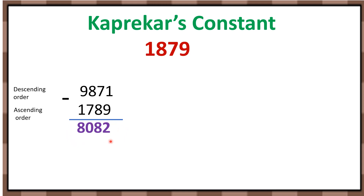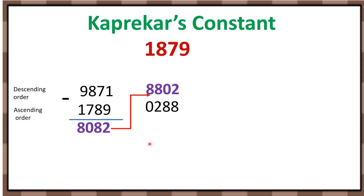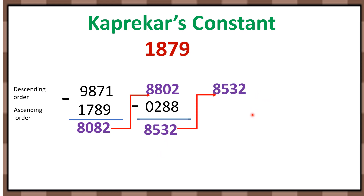Now, whatever result we are getting, we repeat this process. With 8082, write it again in descending order — so it will be 8802. Next, write the same number in ascending order — 0288. Subtract, and the result is 8532. Now repeat the process again: write 8532 in descending order, then write it in ascending order, and subtract. The answer is 6174.